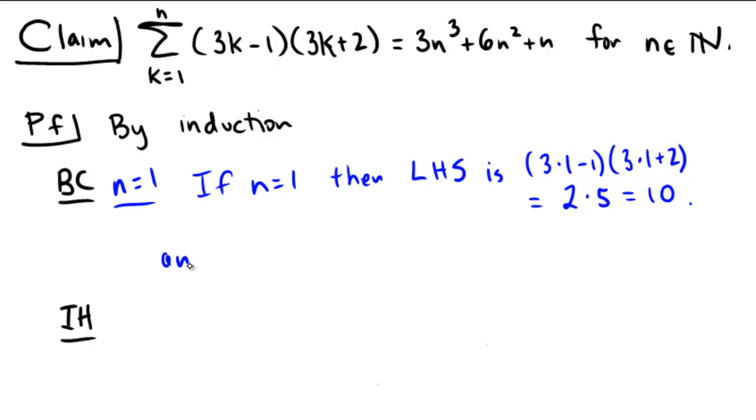On the right-hand side, we substitute in 1 for n, so we get 3 times 1 cubed plus 6 times 1 squared plus 1, which is 3 plus 6 plus 1, which is also 10. So the base case holds, because when we replace our variable n with 1 on either the left or the right, we get a true statement—10 equals 10. This doesn't prove the claim, but it proves that it is true in the case of n equals 1.